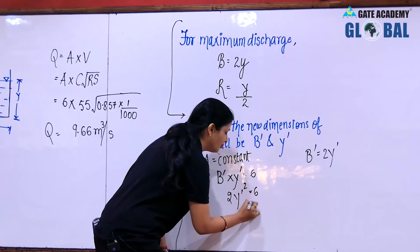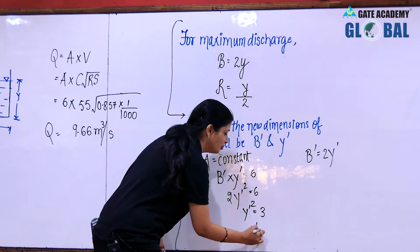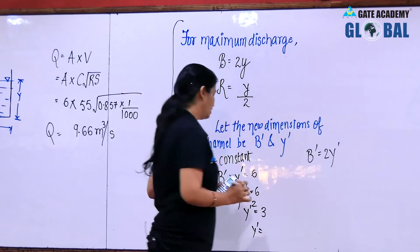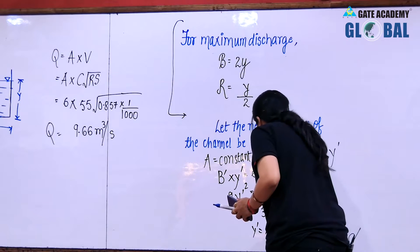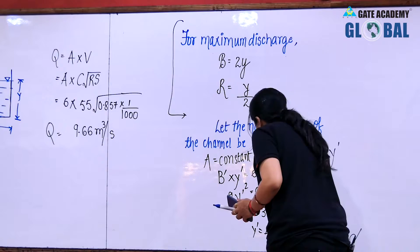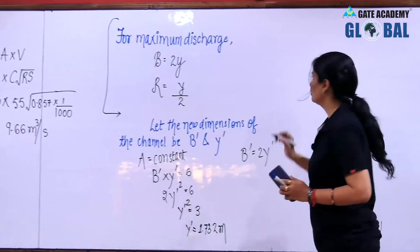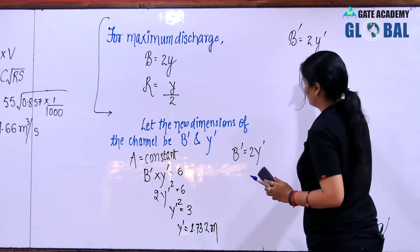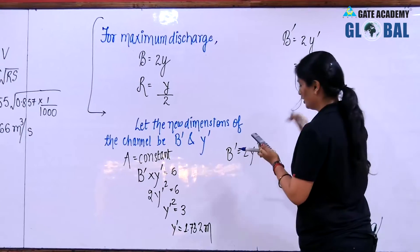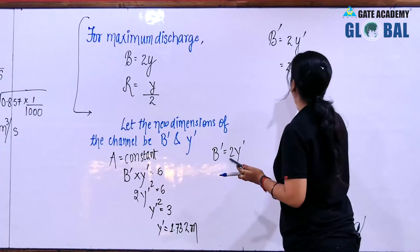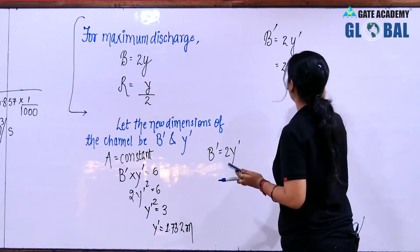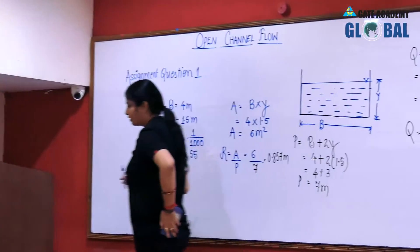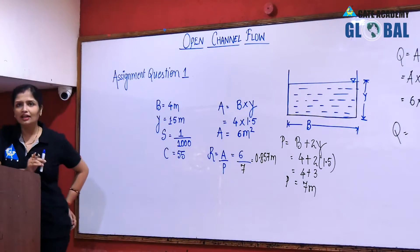Y dash² equals 3, so Y dash equals √3, which is 1.732 meter. The new depth of flow is 1.732 meter. Width B dash equals 2 × Y dash, which gives 3.464 meter. So the new dimensions are B dash = 3.464 meter and Y dash = 1.732 meter.